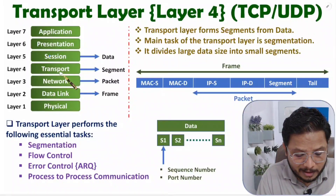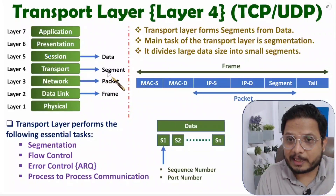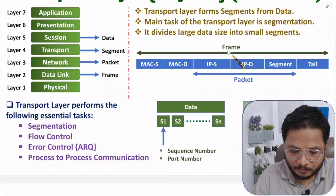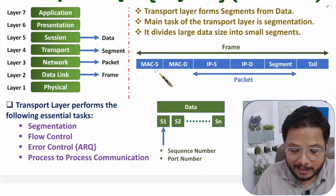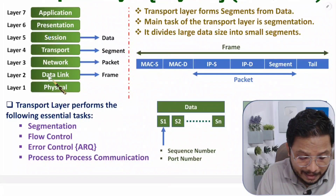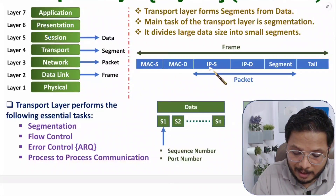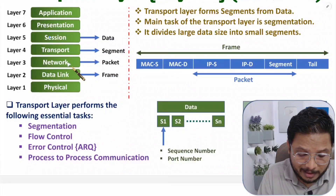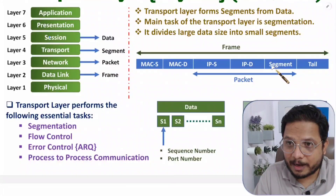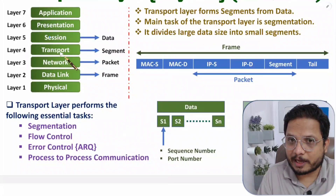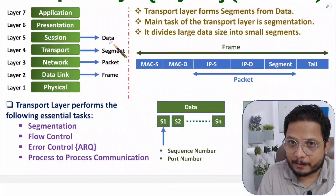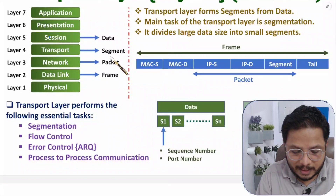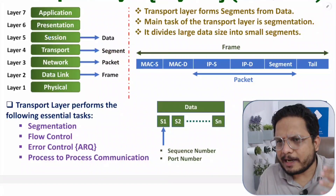The transport layer performs segmentation, and the output is called a segment. If you observe the frame structure, you'll see the MAC address of source and destination added at the data link layer, the IP address added at the network layer, and the segment generated at the transport layer. So input to the transport layer is data, and output is a segment.